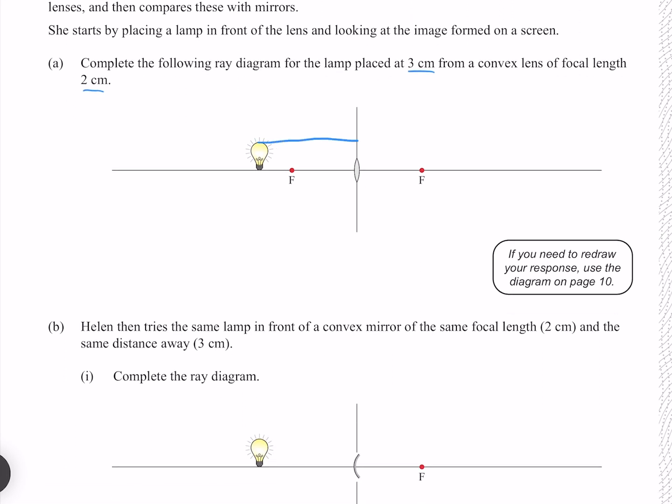Our first ray starts off parallel and then refracts through the focal point. Our second ray goes straight through the middle, and our third ray goes through the focal and then refracts parallel. Not the straightest diagram, but we can still see that we have our image roughly here.